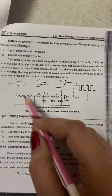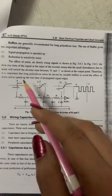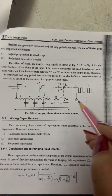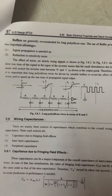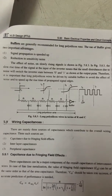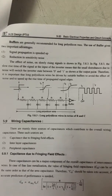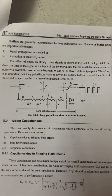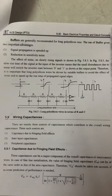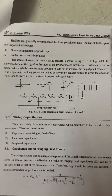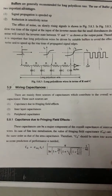The effect of noise on slowly rising signals is shown here. You can see the input signal and the output signal. The slow rise time of the signal at the input of the inverter means small disturbances due to noise will switch the inverter state between zero and one. Therefore, it is important that long polysilicon wires be driven by suitable buffers to avoid the effect of noise and to speed up the rise time of propagated signal edges.